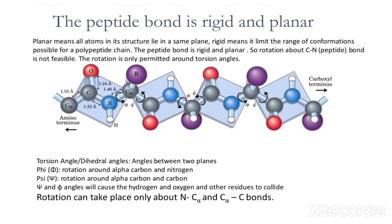The peptide bond is rigid and planar, meaning the atoms involved lie in the same plane. Rigid means it limits the range of conformations possible for a polypeptide chain — rotation does not occur at the peptide bond.